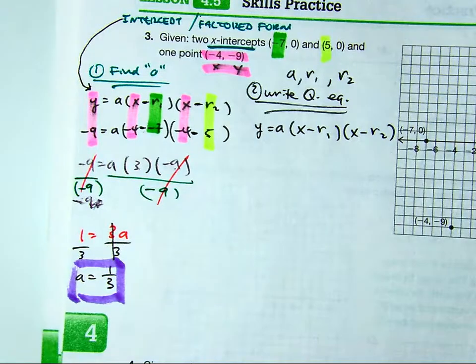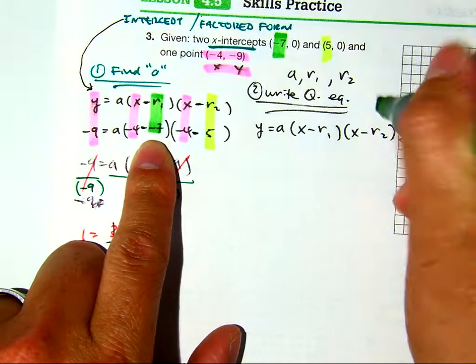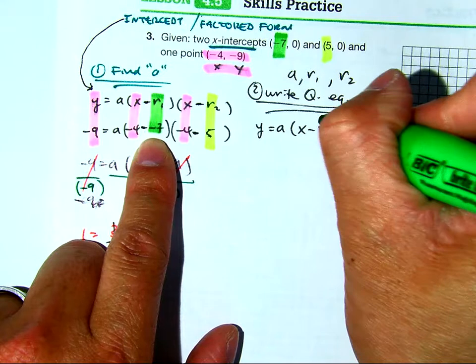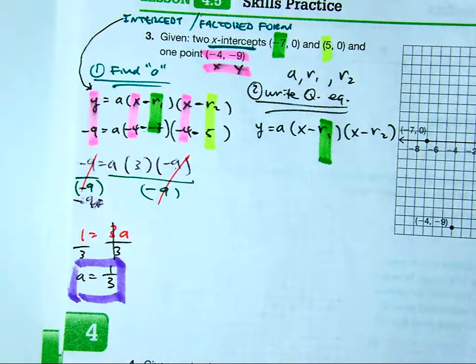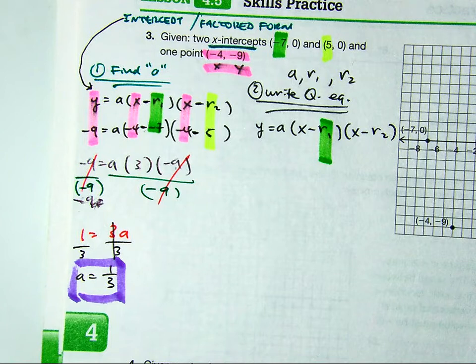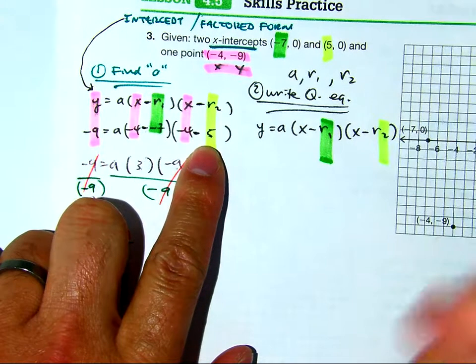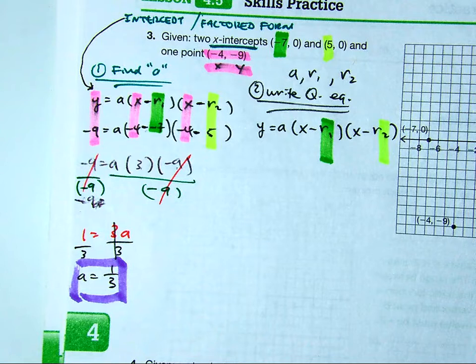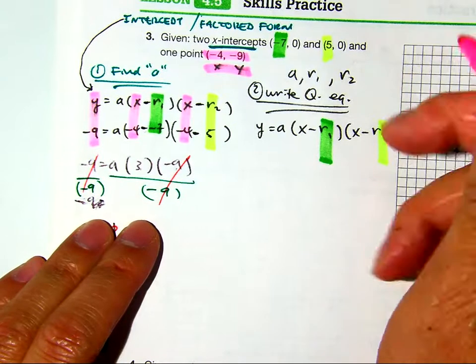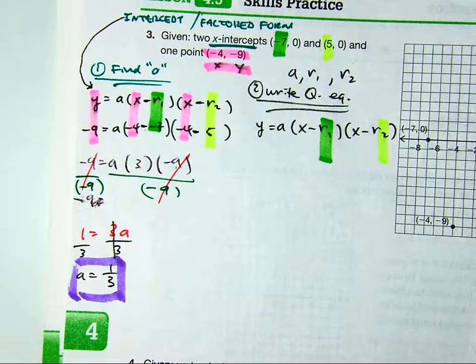Substitute them in. My r1 value is -7. And you can actually use your highlighters on your next quiz or test. Perfectly fine. R2 value is 5. And then we're going to substitute in our a value, which is here.